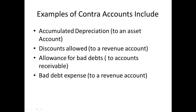Examples of Contra accounts include accumulated depreciation, which we've just looked at — it's a Contra account to an asset. A discount allowed is a Contra account to a revenue account. Since a revenue account has a normal balance of a credit, a discount allowed will have a normal balance of a debit because it's the Contra account to the revenue account.